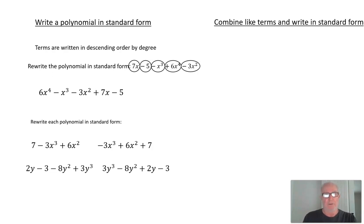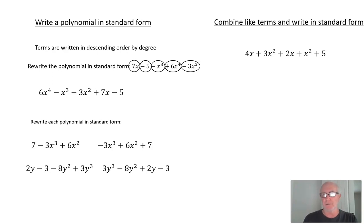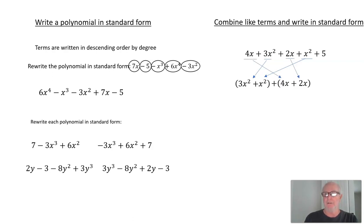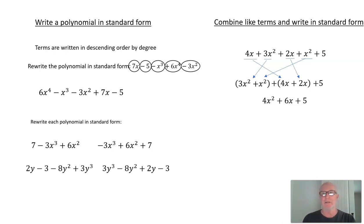Sometimes we get expressions that have a lot of terms, and some of them are like terms. In order to put something in standard form, we have to combine the like terms and then put them in order. Here's a polynomial: 4x + 3x² + 2x + x² + 5. We have 3x² and x² as like terms, and 4x and 2x as like terms. So 3x² + x² = 4x², and 4x + 2x = 6x, plus 5. The polynomial in standard form is 4x² + 6x + 5.